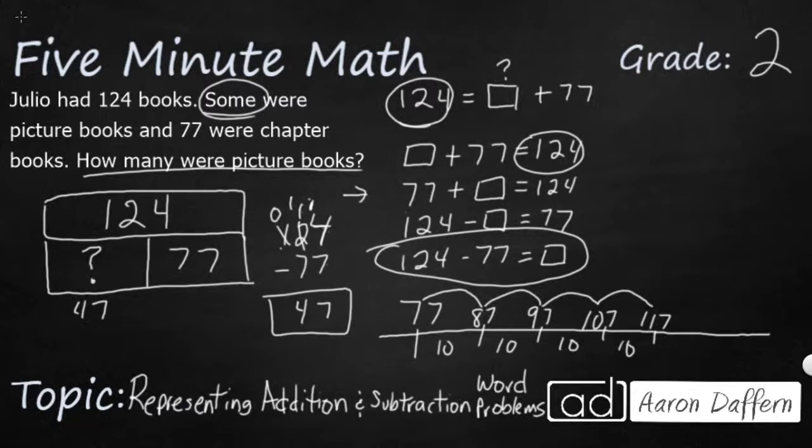And I'm going to say 117, 118, 119, 120, 121, 122, 123, 124. So I had one, two, three, four, five, six, seven hops. So that's seven.